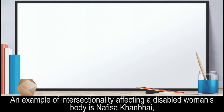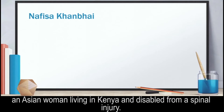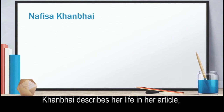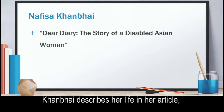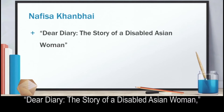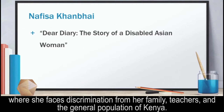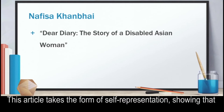An example of intersectionality affecting a disabled woman's body is Nafisa Kanbai, an Asian woman living in Kenya and disabled from a spinal injury. Kanbai describes her life in her article, Dear Diary: The Story of a Disabled Asian Woman, where she faces discrimination from her family, teachers, and the general population of Kenya.